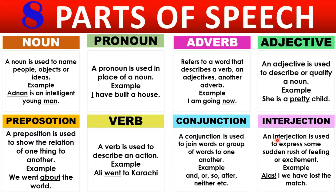The last, eighth part of speech is interjection. Interjection is used to express some sudden rush of feeling or excitement — for example, 'alas' showing grief, 'hurrah' showing excitement. These are called interjections. So how many parts of speech? Eight: noun, pronoun, adverb, adjective, preposition, verb, conjunction, interjection.